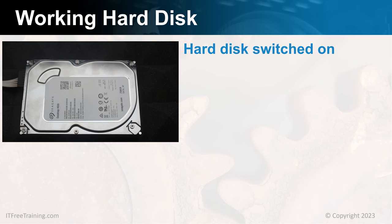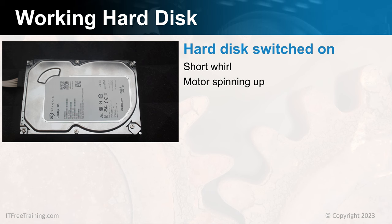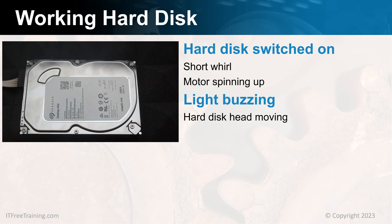When you first switch on a hard disk, you should hear a whirring sound, which is the motor spinning up. If you put your hand on the hard disk when you first switch it on, you may be able to feel some vibrations from the motor. After the hard disk has spun up, you should hear the sound of the hard disk head moving — a light buzzing sound. This sound is normal and should be pretty quiet and random in nature. When the hard disk is first switched on, it will do some self-checks, which involves moving the hard disk head around.